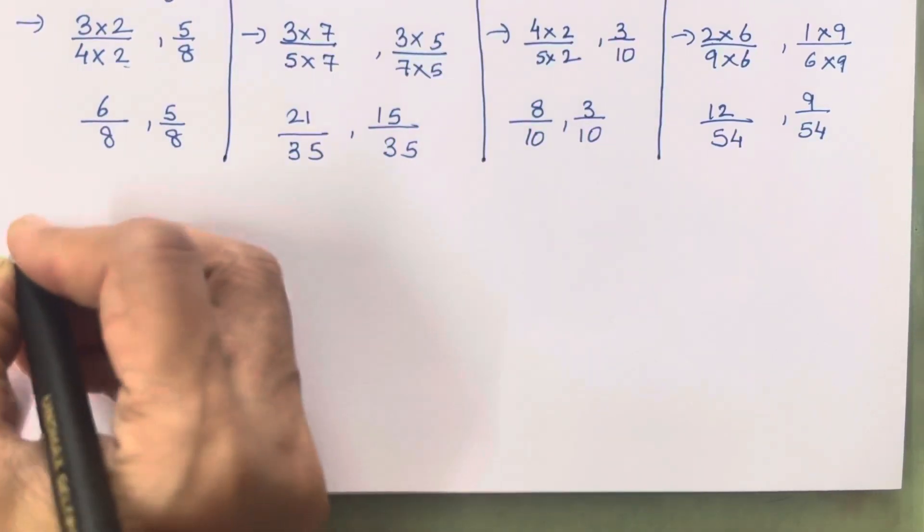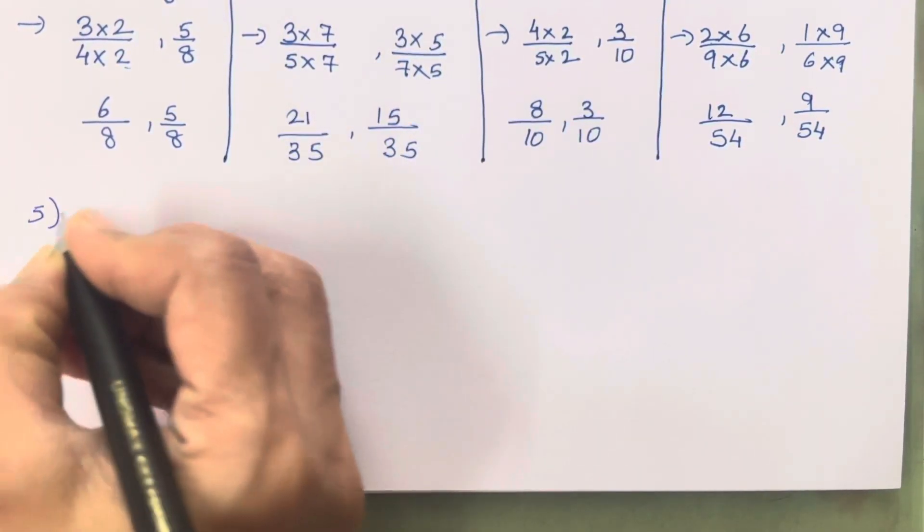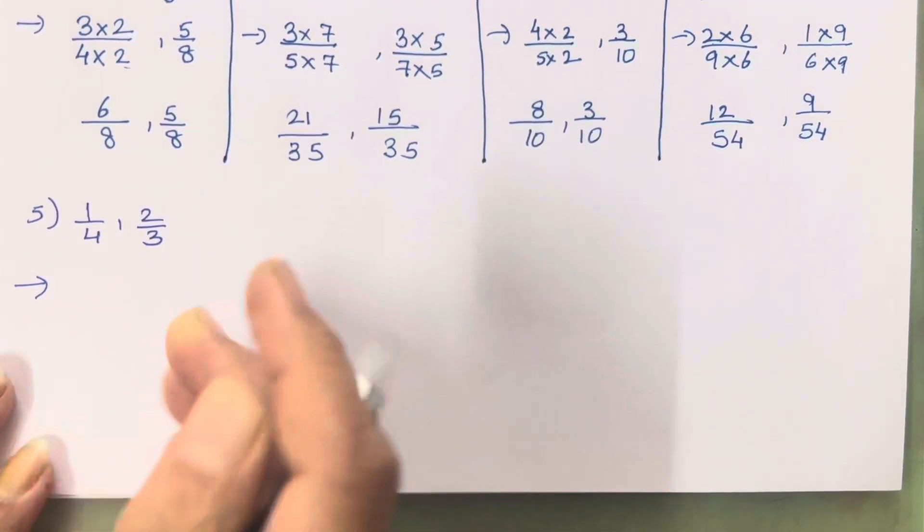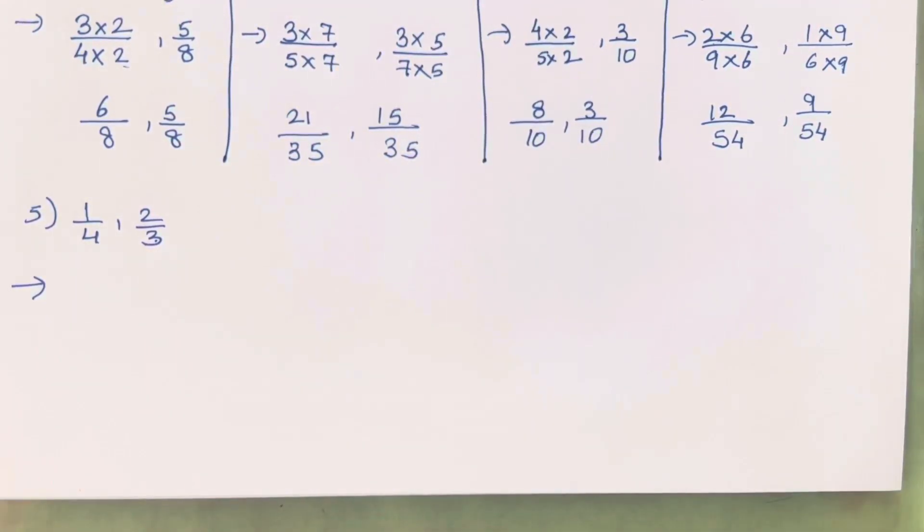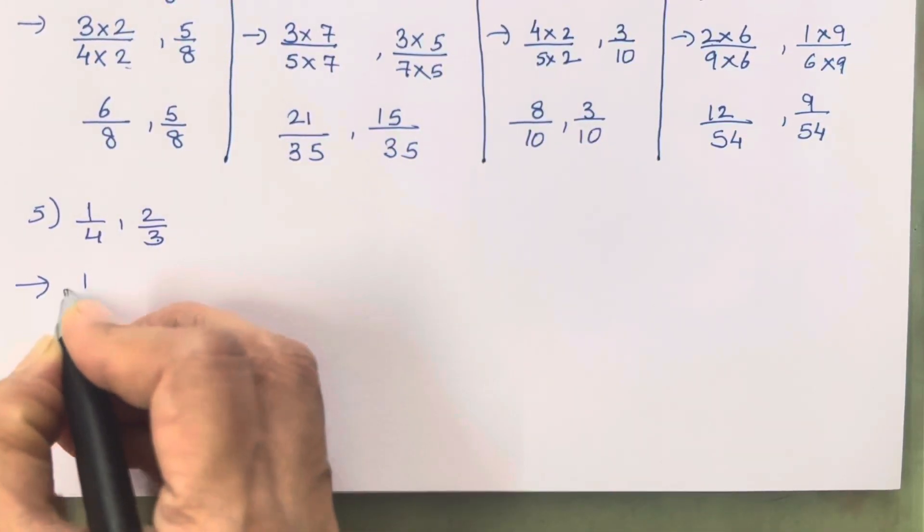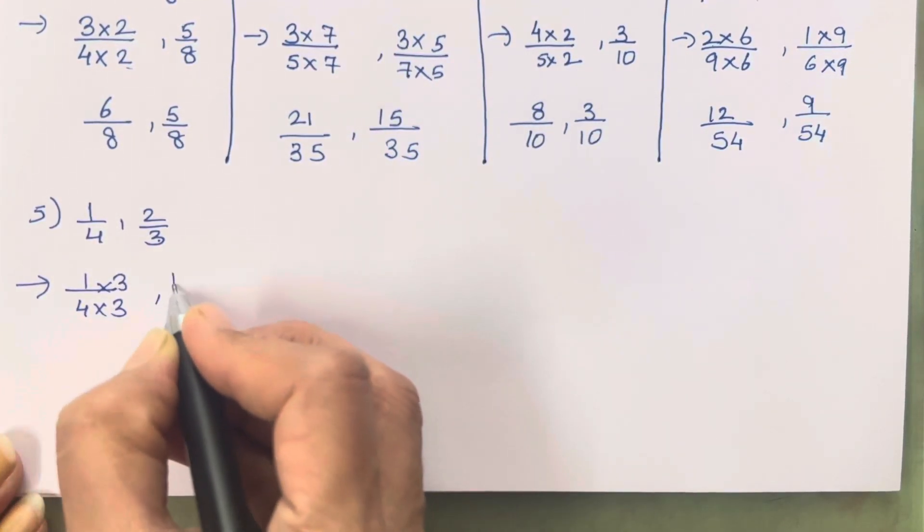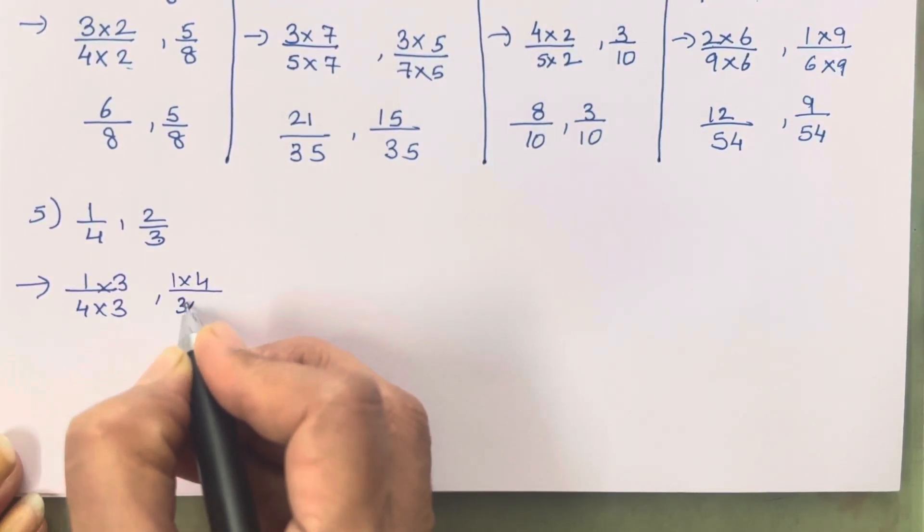Now just below this only I will solve the fifth sum. 1 upon 4 and 2 upon 3. So 4 ki table me 3 nahi aata, 3 ki table me 4 nahi aata. So in dono ko ek dusre se multiply kar do to get the like terms. So 1 into 3, 4 into 3.